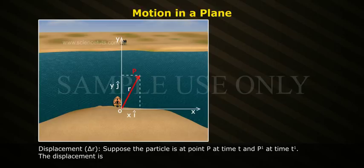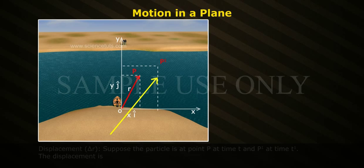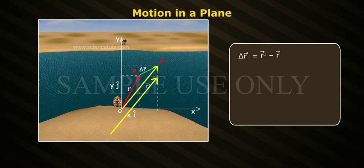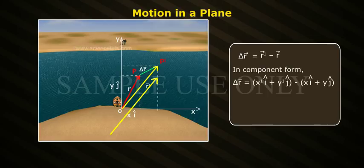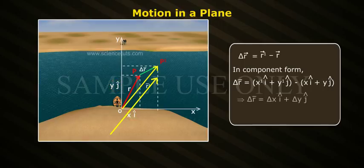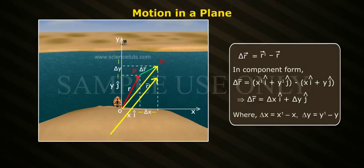Displacement ΔR bar. Suppose the particle is at point P at time T and P-dash at time T-dash. The displacement is ΔR bar equals R-dash bar minus R bar. In component form, ΔR bar equals X-dash i-cap plus Y-dash j-cap minus X i-cap plus Y j-cap. That implies ΔR bar equals ΔX i-cap plus ΔY j-cap, where ΔX equals X-dash minus X and ΔY equals Y-dash minus Y.